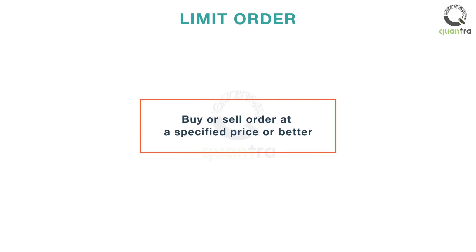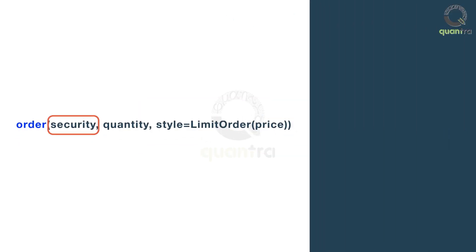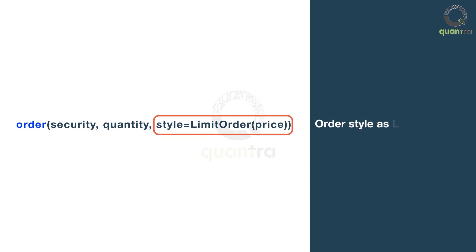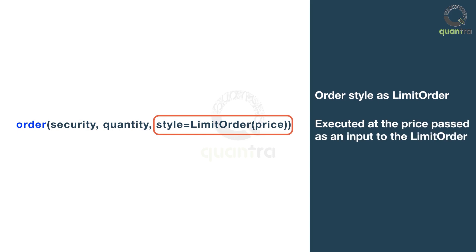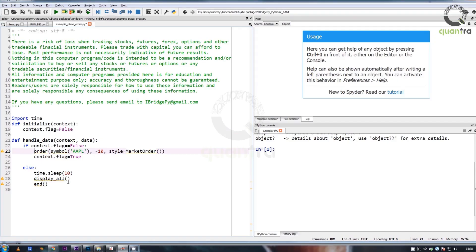The second order type is a limit order, which is a buy or sell order at a specified price or better. The syntax is: order security, quantity, style equals limit order price. The order style should be mentioned as limit order and it is executed at the price passed as an input to the limit order. For example, the syntax to buy 20 shares of Apple Incorporated for $170 is: order symbol Apple, 20, style equals limit order 170.